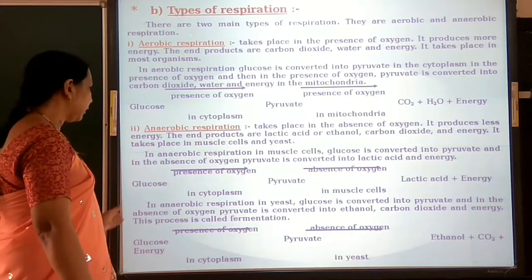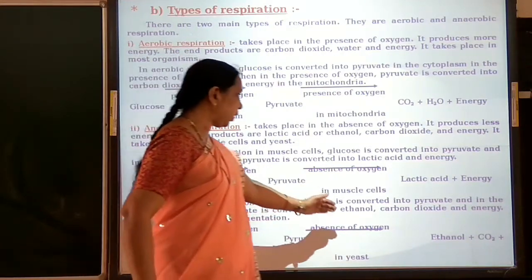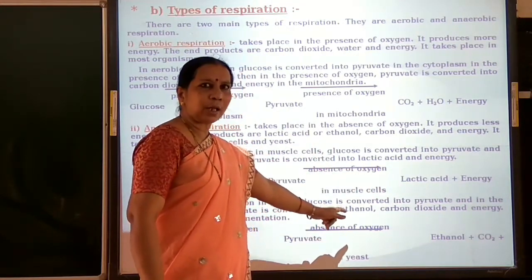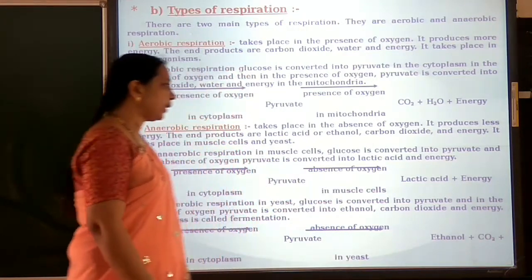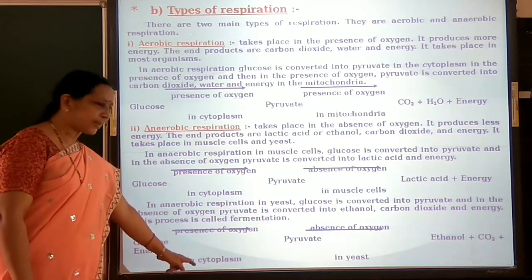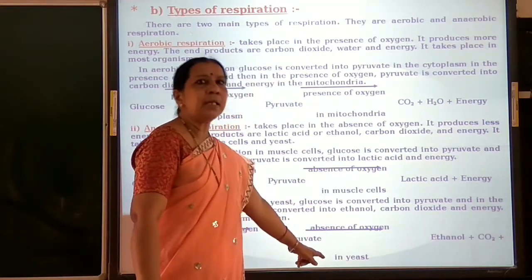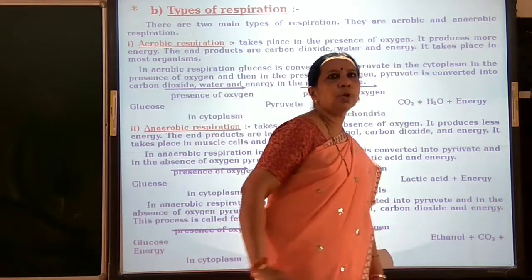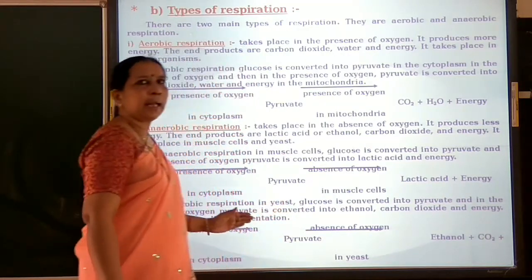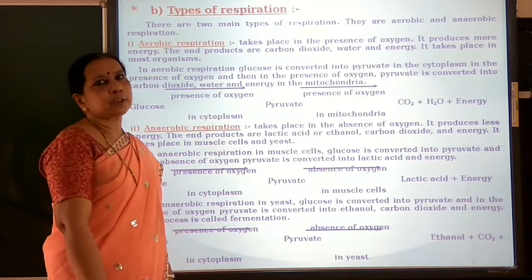Pyruvate in the absence of oxygen gets converted into ethanol (ethyl alcohol), carbon dioxide and energy. So glucose in the presence of oxygen in the cytoplasm converts into pyruvate, and pyruvate in the absence of oxygen in the yeast cell gets converted into ethyl alcohol and carbon dioxide. Ethanol, carbon dioxide and energy are the byproducts of anaerobic respiration in yeast.